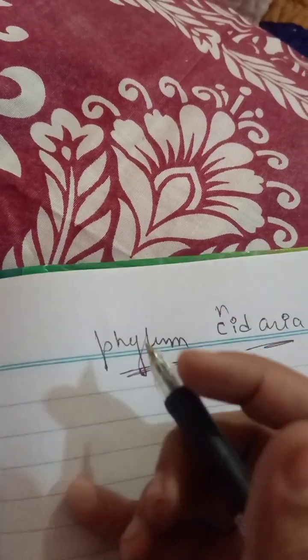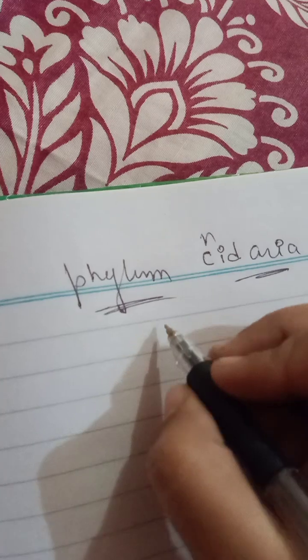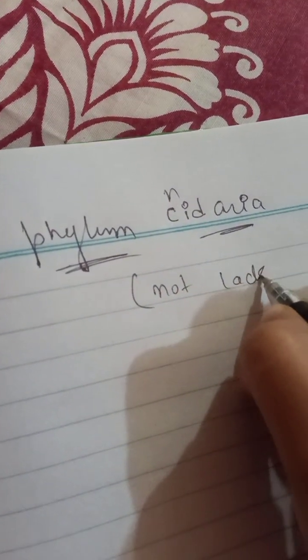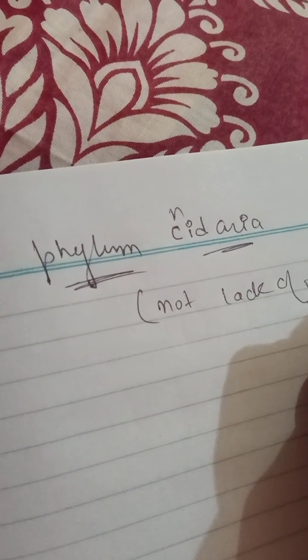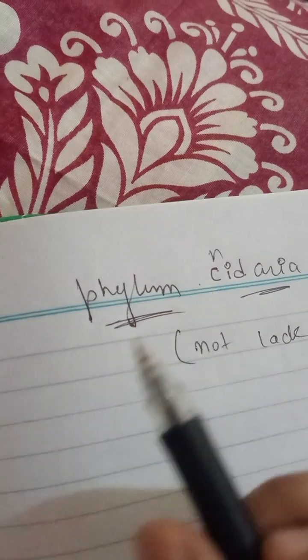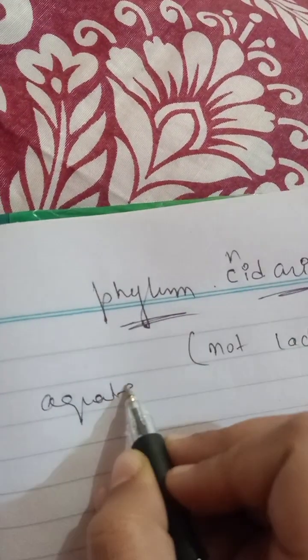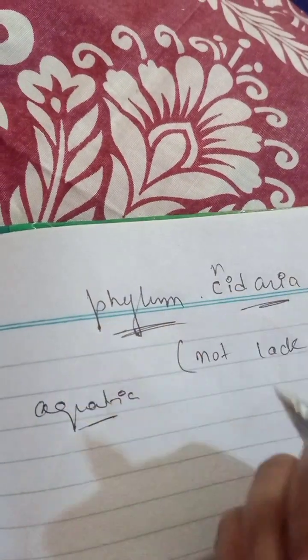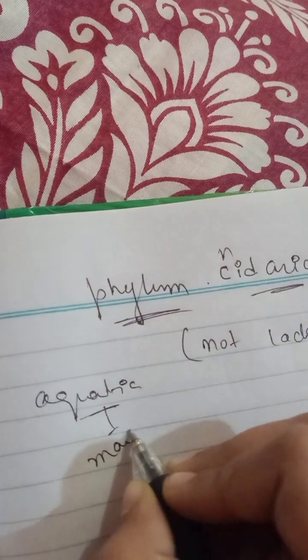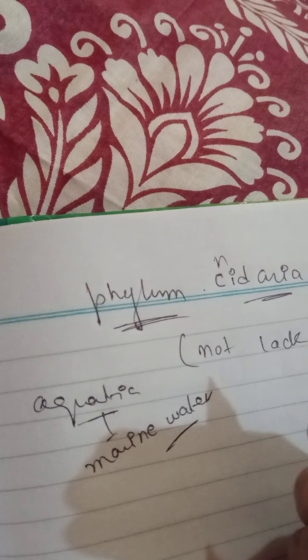Cnidaria are basically more complex than sponges. Porifera are also sponges but they are not complex — they lack organized tissues and cells. If we talk about Cnidaria, they are basically aquatic animals. Most of the Cnidaria live in marine water, which is salty water, and few live in fresh water.